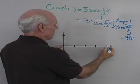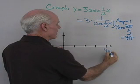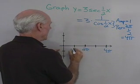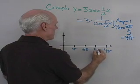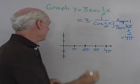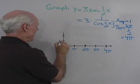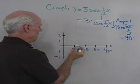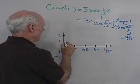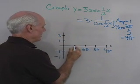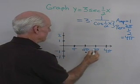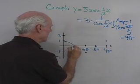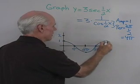So if I graph y = cos(½x), it'll start at 0 and end at 4pi, with 2pi in the middle, then 1pi and 3pi. Labeling the y-axis with 1, negative 1, 2, and negative 2, the cosine will start at 1, go down to 0, down to negative 1, back up to 0, and then up to 1. Here is my cosine function.